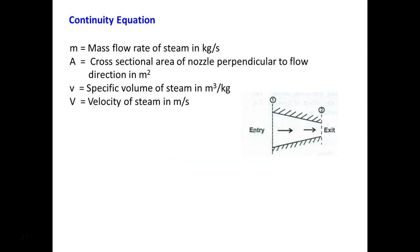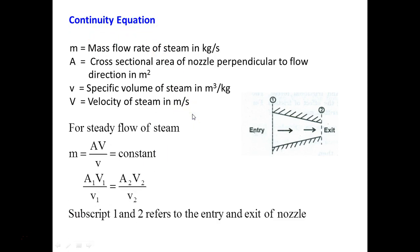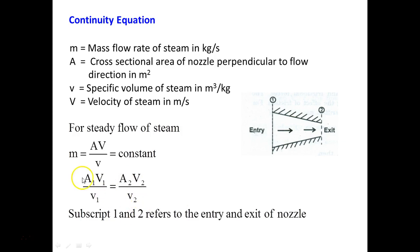The continuity equation for the nozzle comes from the mass conservation principle, which states that m equals A·V divided by specific volume v, equal to constant, where A is the cross-sectional area, V is the velocity, and small v is the specific volume of the steam. Applying this at inlet and outlet: A₁V₁/v₁ equals A₂V₂/v₂ equals m. This equation is important for solving problems.